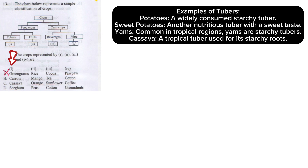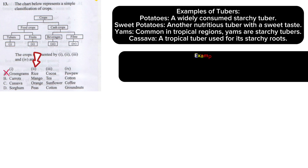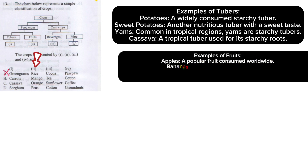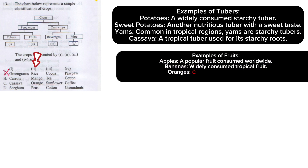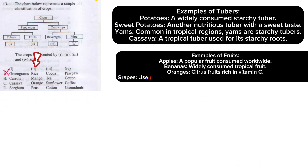Let's move to Roman numeral two, which is fruits. Examples of fruits include apples, bananas, oranges, grapes, pineapples — there are many fruits. Under Roman numeral two, we have mango, orange, and peas. Since we've already removed choice A, and peas are not fruits, choice D is also out.